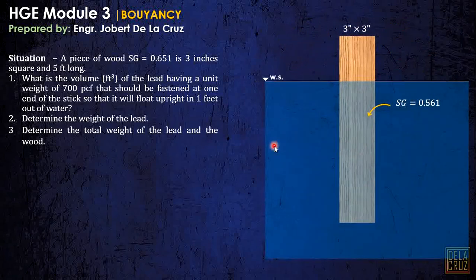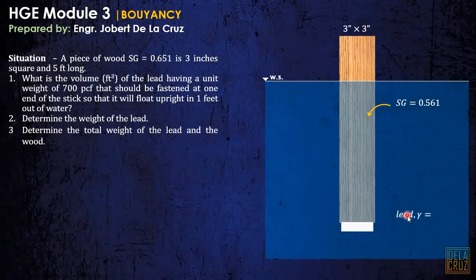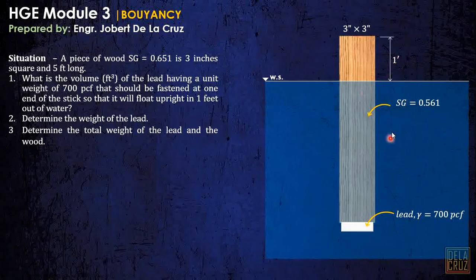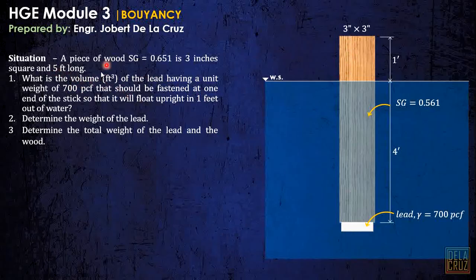So here we add a lid that has a unit weight of 700 pounds per cubic feet. It says that in this position, 1 foot should be out of water. That means the remaining submerged length here is 4 feet. The total length of this wood is 5 feet long.